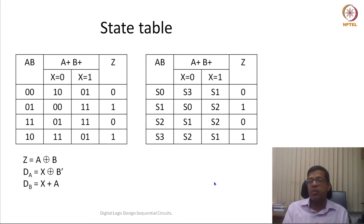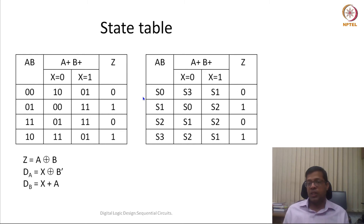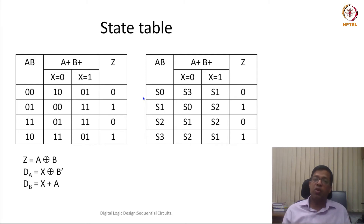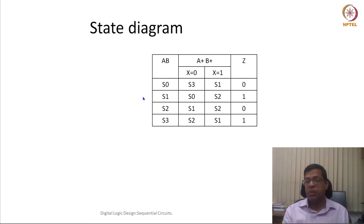This is one of the important representations of a sequential circuit. When we do combinational circuits, they are represented by Boolean expressions or truth tables. Sequential circuits are more appropriately described using state tables, which are very much like truth tables but the encoding of the state is not necessarily defined.